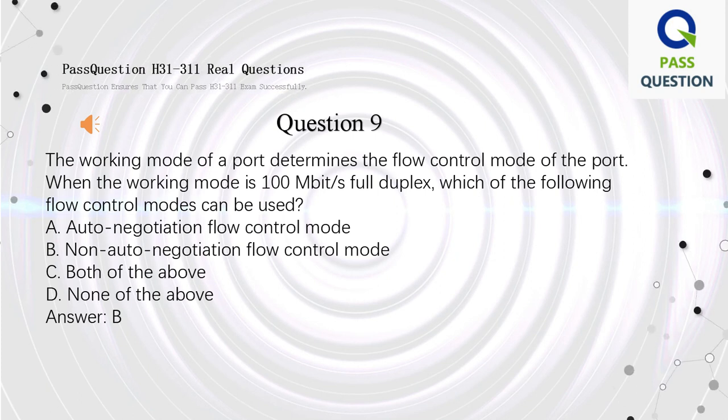Question 9. The working mode of a port determines the flow control mode of the port. When the working mode is 100 Mbps full duplex, which of the following flow control modes can be used? A. Auto-negotiation flow control mode. B. Non-auto-negotiation flow control mode. C. Both of the above. D. None of the above. Answer: B.